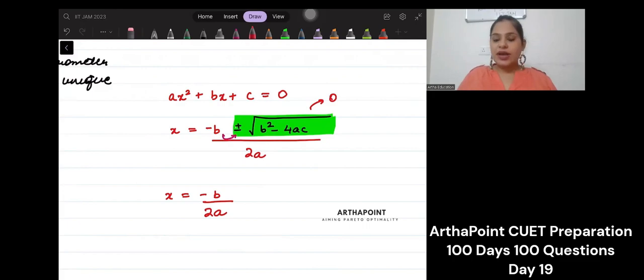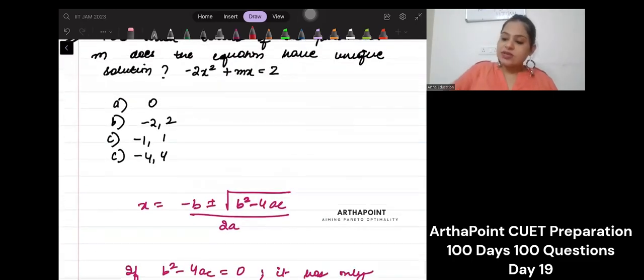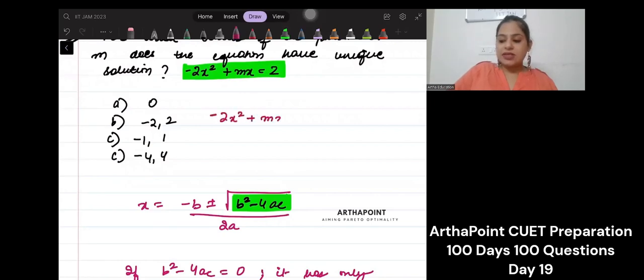So what we can do in this case is that we just have to equate this b squared minus 4ac to 0. Now just have a look at this equation. So what will you have? Minus 2x squared plus mx minus 2 equals 0.